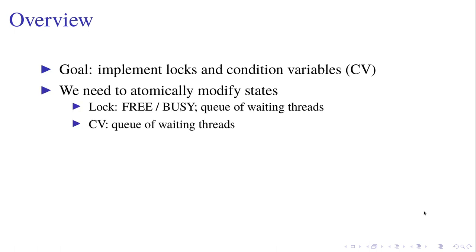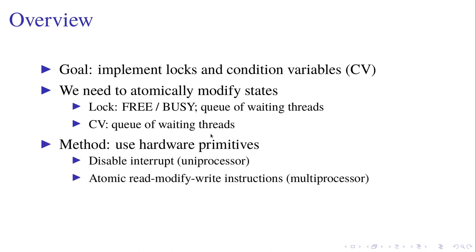To implement them we need to atomically modify the states of locks and condition variables. For example, for locks it can be either free or busy, and it also maintains a queue of waiting threads. Condition variables also maintain a queue of waiting threads. To implement this we are going to use hardware primitives, such as disabling interrupts for uniprocessors and atomic instructions for multiprocessors.